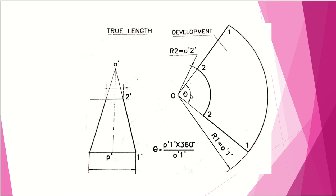Measure theta with a protractor and draw the corresponding line. Join it with a circular arc to complete the development of the cone. Then measure O'2' as a radius and cut an arc on both boundary lines. Make sure the two lines O2 are very light, while the frustum portion should be darker. Thus the development of the frustum is created.